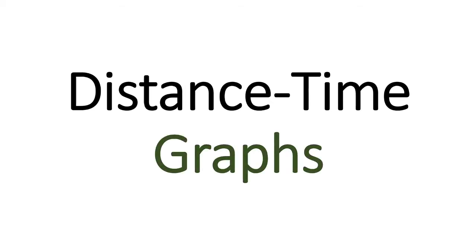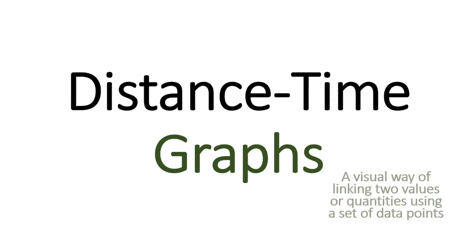Graphs can be one of those slightly daunting words, but in a very basic sense, a graph is a visual way of linking two values or quantities using a set of what are called data points. Or in an even more basic sense, it's a picture showing the link between two different things. It should be fairly obvious what the two different things are — if we're looking at distance-time graphs, presumably a distance-time graph is a graph showing the link between distance and time.